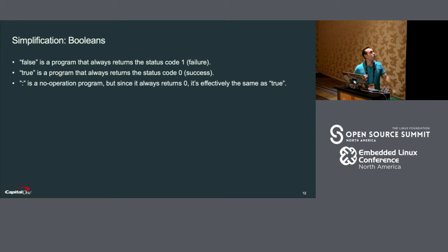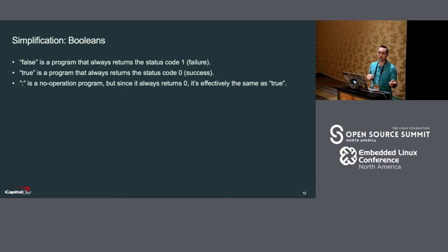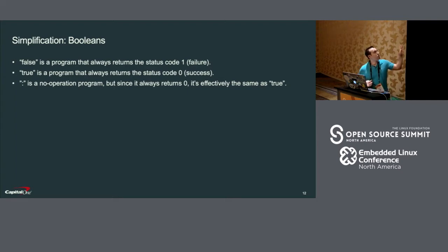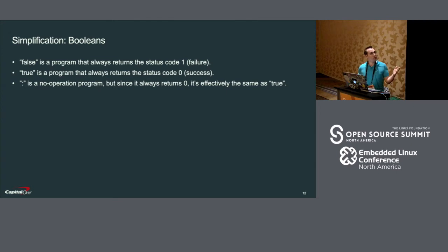The previous simplification works because of what true and false really are in bash. They are programs — the word 'true' is a program that just always returns zero, and zero means success. Likewise, 'false' is just a program that always returns one, meaning that it failed. Also, there's a command called colon, which is just the no-operation program in bash. Since the colon operation always returns zero, it's effectively the same thing as the true statement.